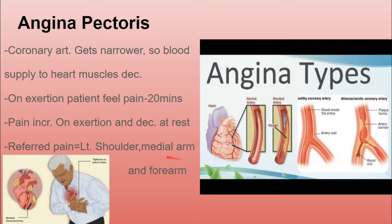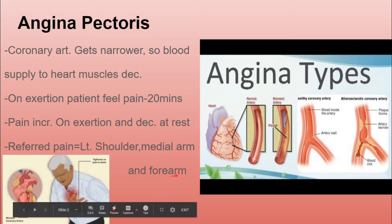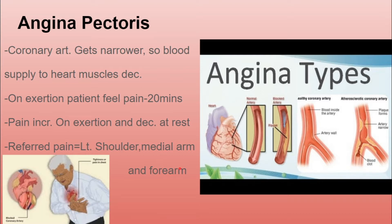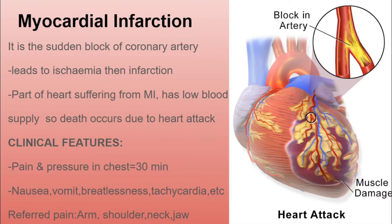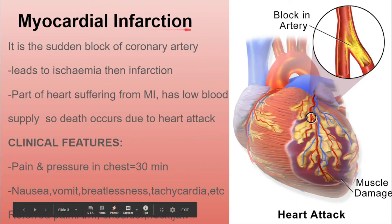Ischemia means restricted blood flow to a particular organ. The referred pain in angina pectoris is felt at the left shoulder, medial arm, and forearm. Just remember, in angina pectoris there is narrowing of the coronary arteries — the arteries of the heart. Now the next condition is myocardial infarction.